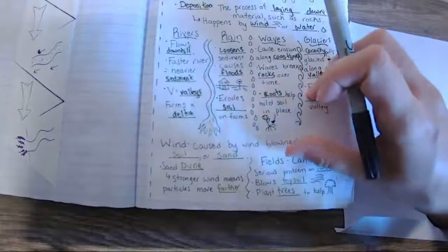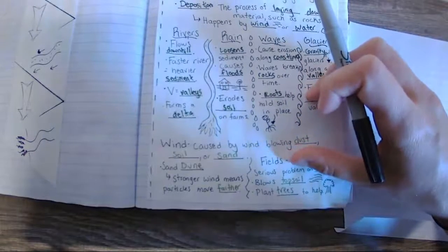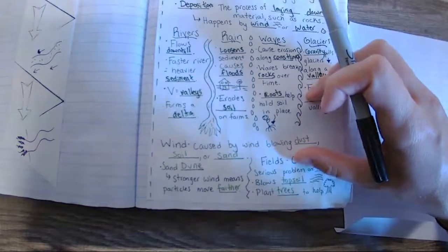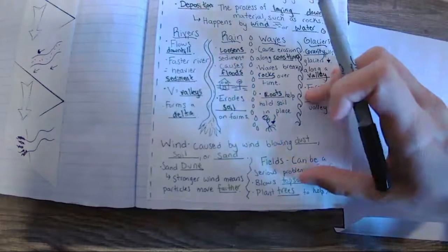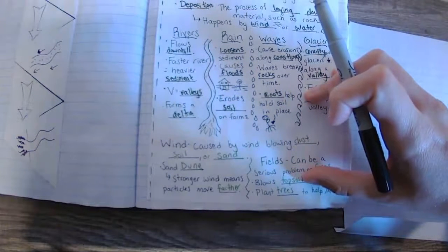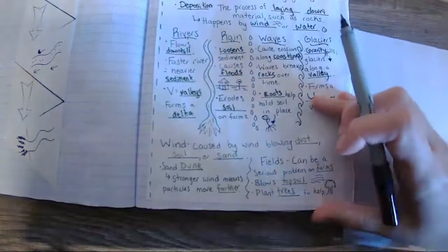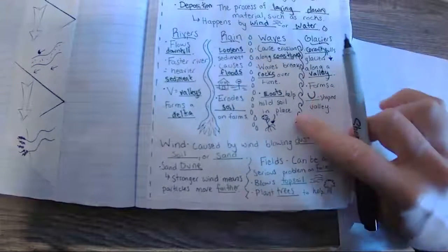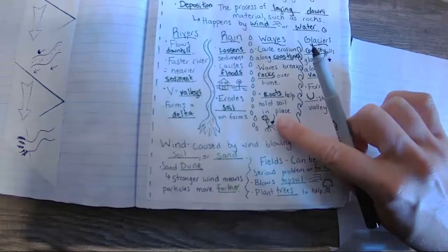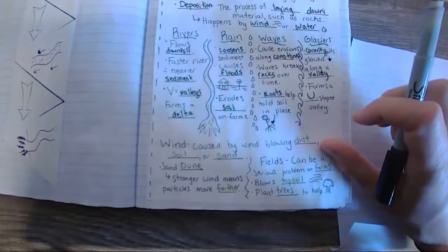Now, fields are another area where we see a lot of erosion and deposition happening. This can be a serious problem on farms because wind blows topsoil away. So what farmers do is they oftentimes plant trees in order to help block the wind. Remember those roots also help keep soil in its place. So I'm going to go ahead and darken those again for us here.